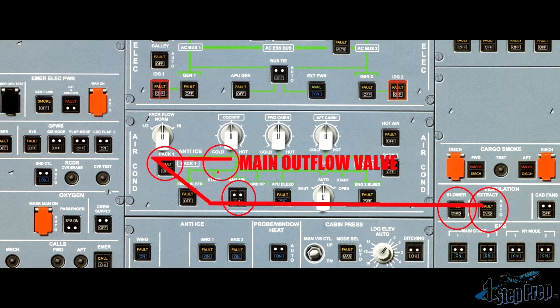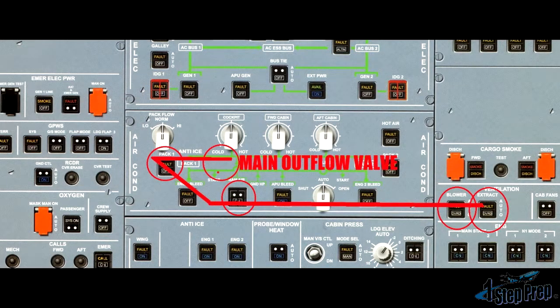Then we're going to continue with the ram air valve, the pack flow control valve, and the main outflow valve. All right, as Juan mentioned, five valves — and I want you to take a look at this picture. Look at the outline. What do you see on the outline of these five valves?